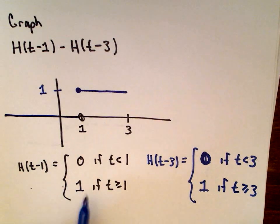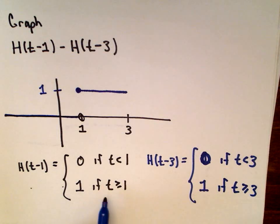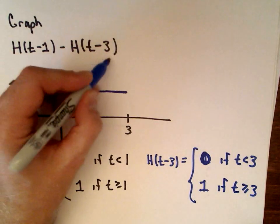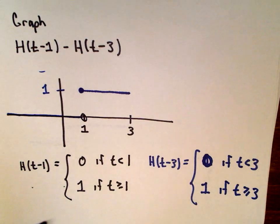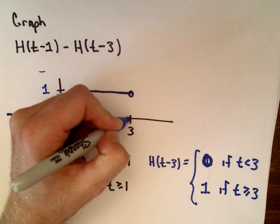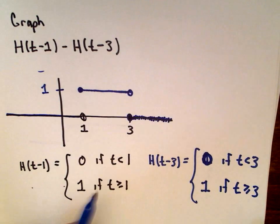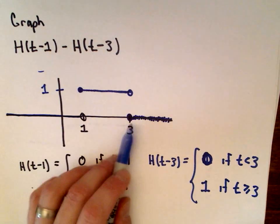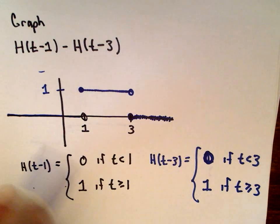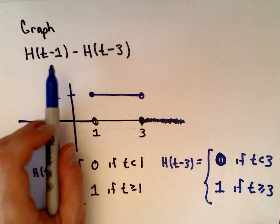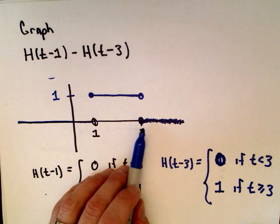What happens when we get to t equals 3? At t equals 3, the first function h of t minus 1 still equals 1 everywhere. h of t minus 3 also now has a value of 1. So their difference becomes 1 minus 1, which is 0. At t equals 3, I'm going to put an open circle at 0. Since both have a value of 1 after that, their difference will always be 0. So geometrically, the function kicks on at t equals 1 and then kicks off at t equals 3.